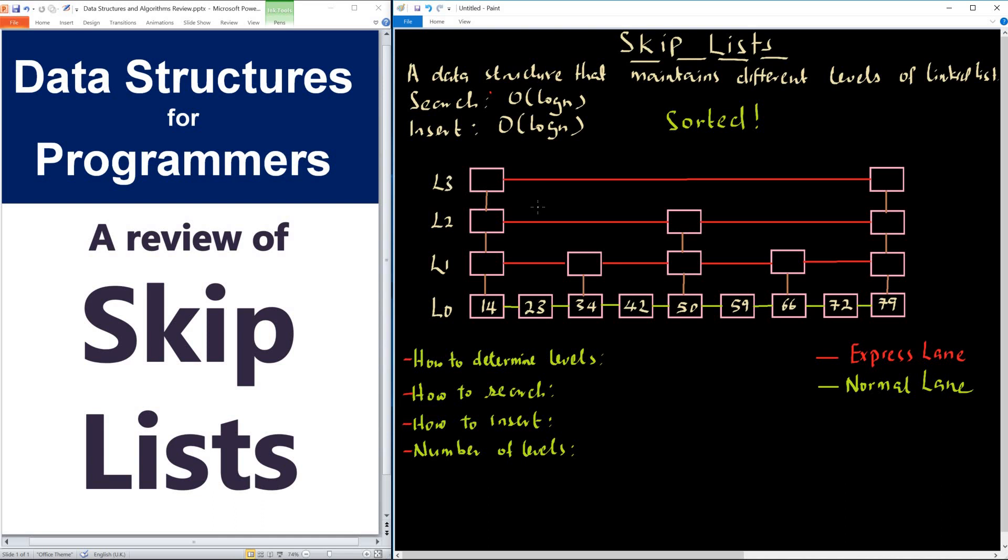As I mentioned, think of it as a skip list has only one single linked list, but then we need to create additional lists on top of this linked list. Where do we get elements to place on these additional linked lists? For instance, we have L1. Where do we get elements to place in there?